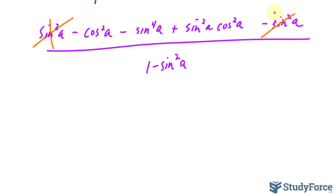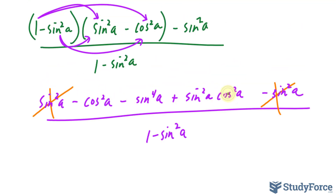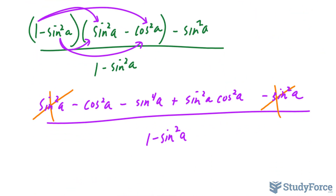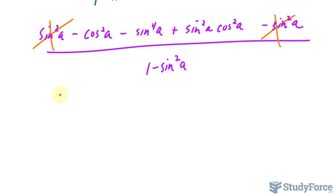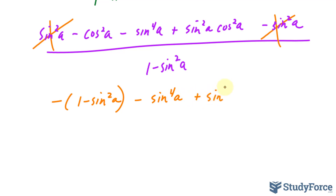This term will cancel with that one — the positive and negative versions cancel. Furthermore, we still have cosine squared A here and here, which we need to get rid of. So I'll replace both instances of cosine squared A with the identity 1 minus sine squared A. We get negative bracket 1 minus sine squared A, minus sine to the power of 4A, plus sine squared A times bracket 1 minus sine squared A.